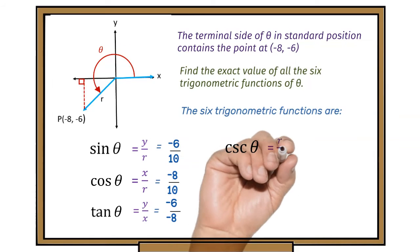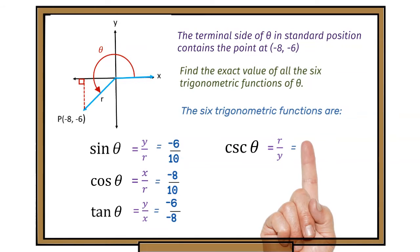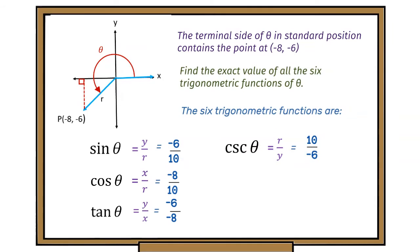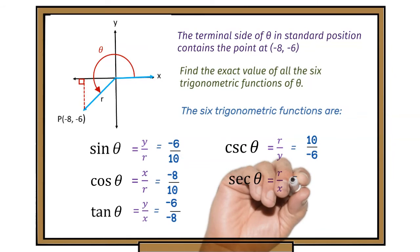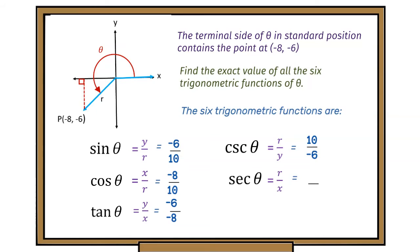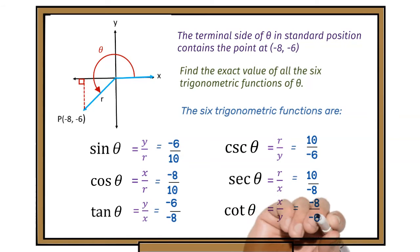Now for the reciprocal functions. Cosecant of theta is r over y, which is 10 over minus six. The secant of theta is r over x, which is 10 over minus eight. And the cotangent of theta is x over y, which is minus eight over minus six. These can be simplified further using a calculator.